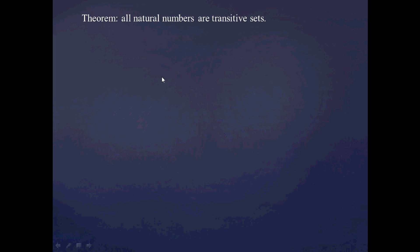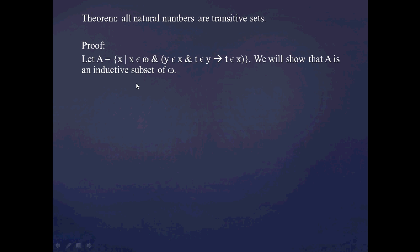So here's the theorem that all natural numbers are transitive sets. And since we're making a claim about all natural numbers, it would be most useful to prove this theorem by induction. We're going to let the set A be all those natural numbers that are transitive — here's just that condition for being transitive.